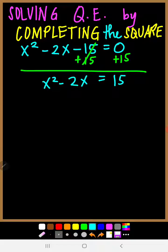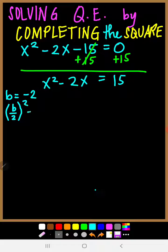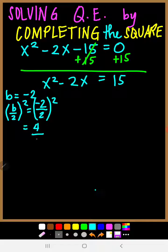After that, we need to identify our b. Our b here is negative 2. Then we get the value of the square of b over 2. So negative 2 divided by 2, and then we square it — square the numerator and the denominator. Negative 2 times negative 2 is positive 4, and 2 times 2 is 4, giving us 4 over 4, which equals 1.